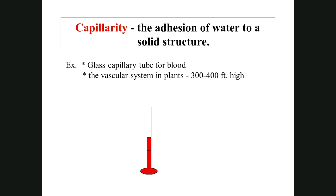The vascular system in plants has structures called sieve tubes — millions of them, side by side, tubular with holes permeable to water. Since capillarity only draws water up so far in one tube, when there's another tube next to it, water transfers from one tube to the next and gets pulled up even higher. Water snakes its way up the plant going from one tube to the next by capillarity.